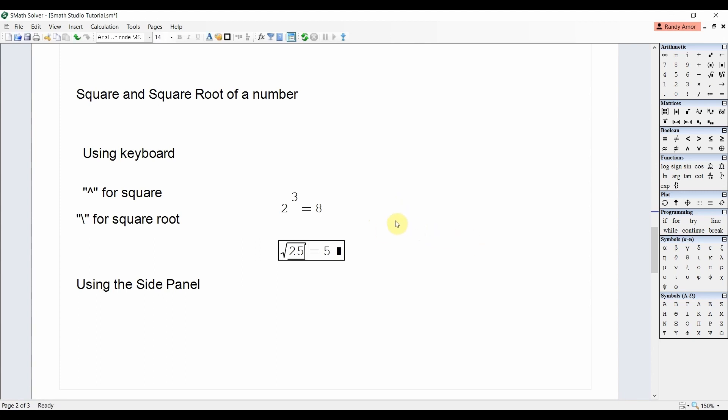In order to get the nth root of a number, press Control backslash, then the symbol for the nth root will appear. Then enter the desired root of the number and then enter the number. For example, to find the cube root of 64, type Control backslash, then the symbol for the nth root appears, and then enter the desired root, enter the number inside the radical sign, and then press Enter. This will give us a value of 4.